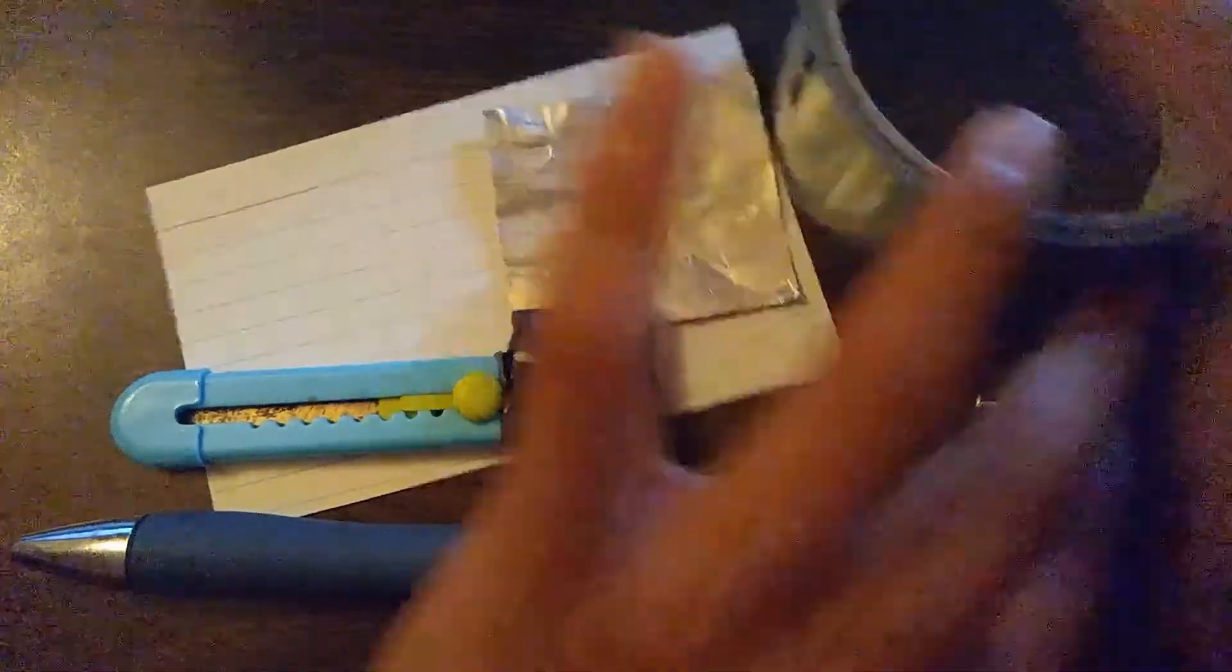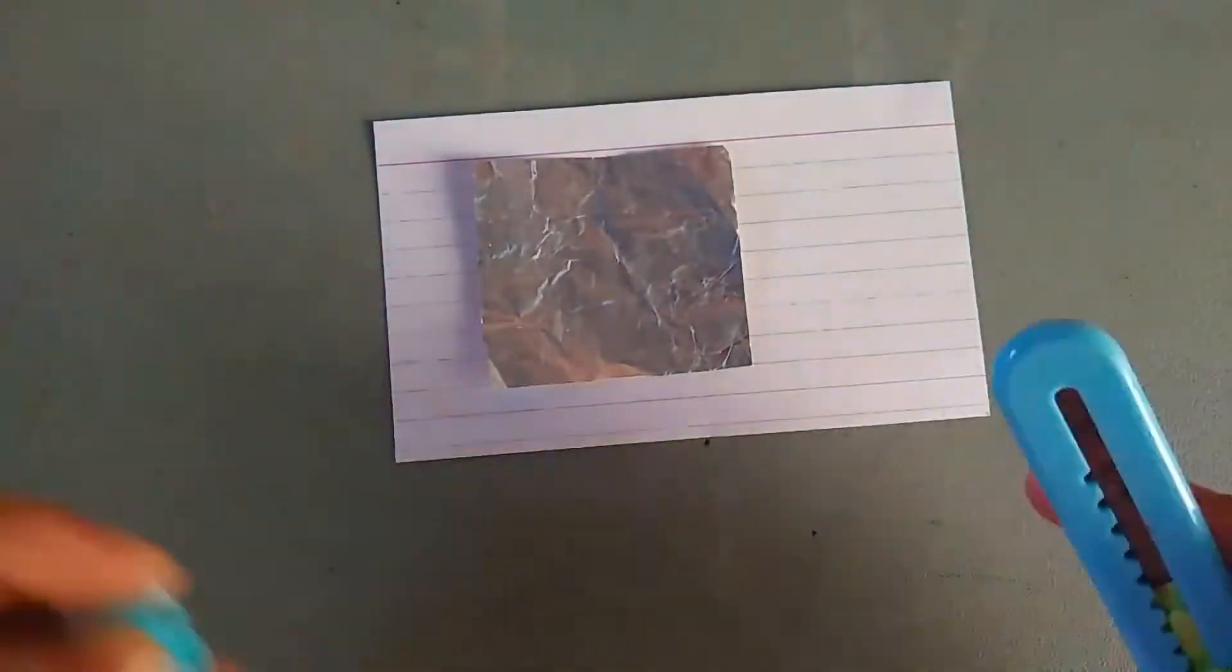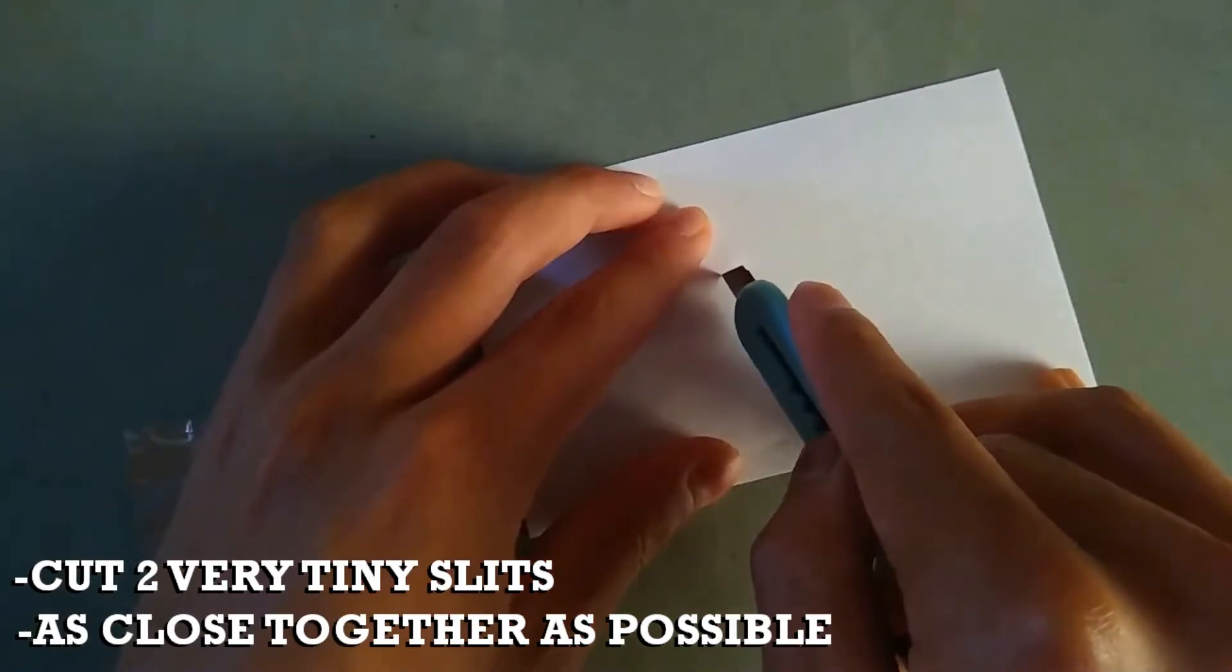Okay, let's begin. So for the double slit screen, you take your razor and cut two very tiny slits that are as close together as you can possibly get them.